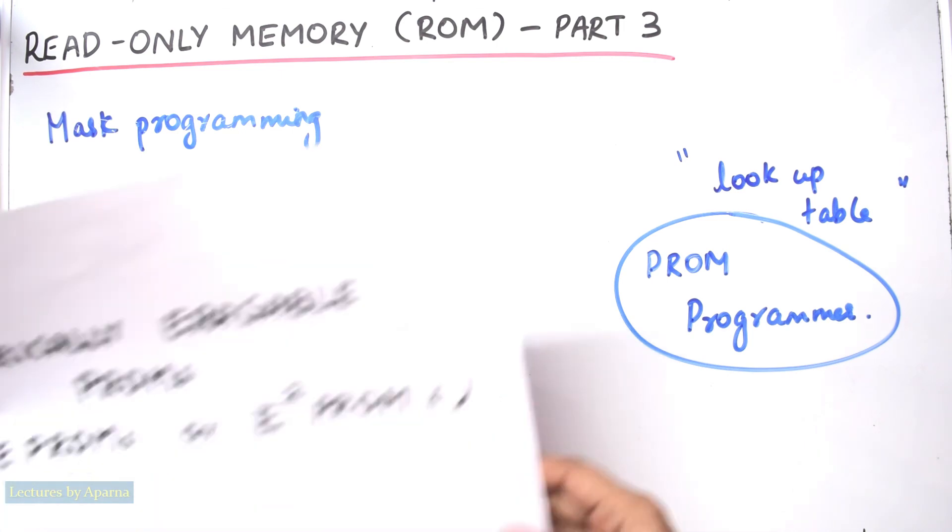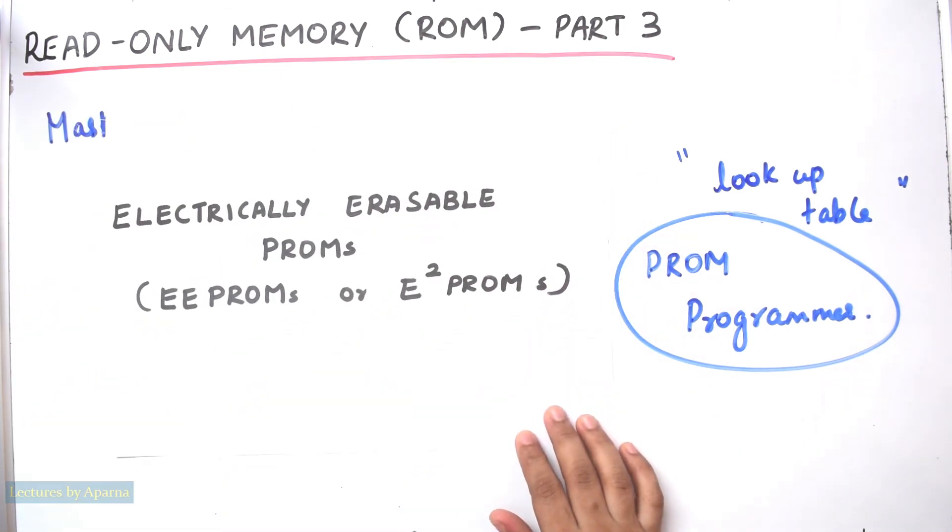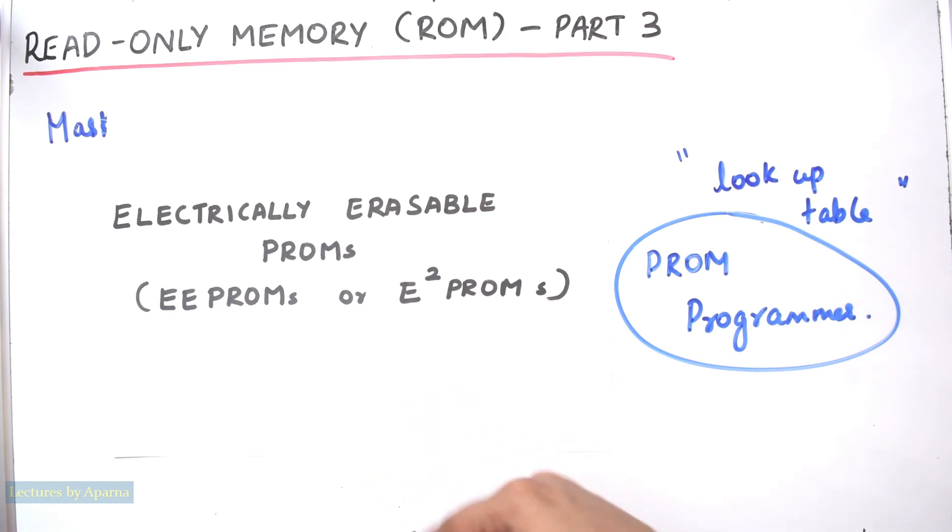The fourth type of ROM is electrically erasable PROMs or EEPROMs or E square PROMs. It is like EPROM only, but in EPROM if you are using ultraviolet light for erasing, here electrical signal is used for erasing. The advantage of this is that you do not need to take this device out from the socket in your kit. You can keep it there in the socket itself and do the erasing. So these are the different types of ROMs or read-only memories.